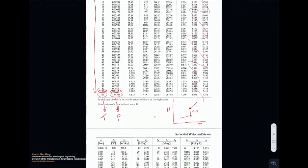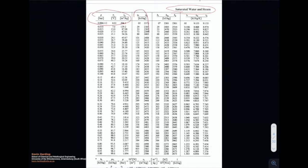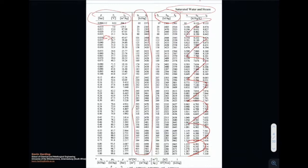On page 3, we again have a similar heading — saturated water and steam — with pressure, temperature, and specific volume. There are now two additional columns in the middle: UF and UG, the internal energy of the fluid (water) and the internal energy of the gas (steam). One difference is that the columns have been swapped for pressure and temperature. Previously we started with temperature in the top left; now we start with pressure on the left-hand column. The reason for having both pages is to make life easier — if asked a question at a specific temperature like 35 degrees Celsius, it may appear directly on one page but not the other. The numbers are the same on both pages.